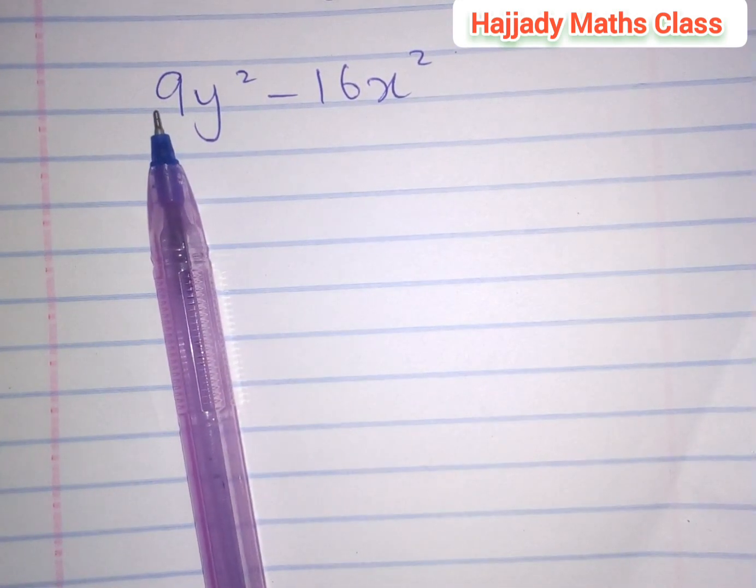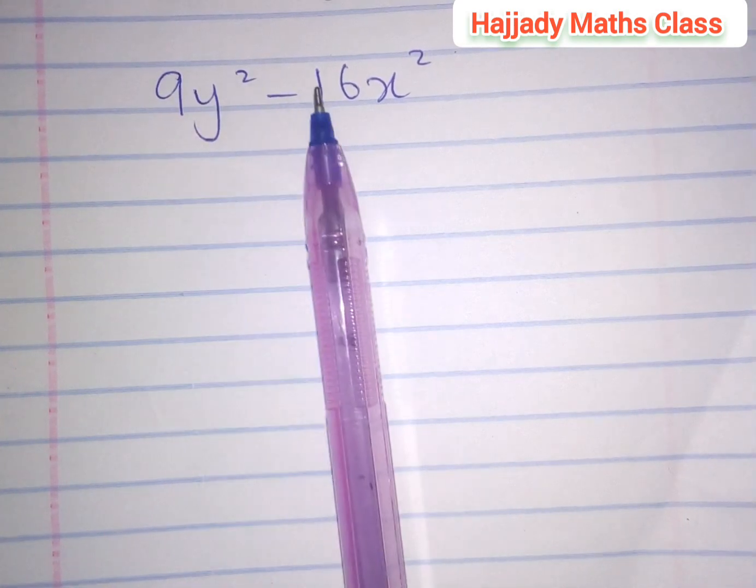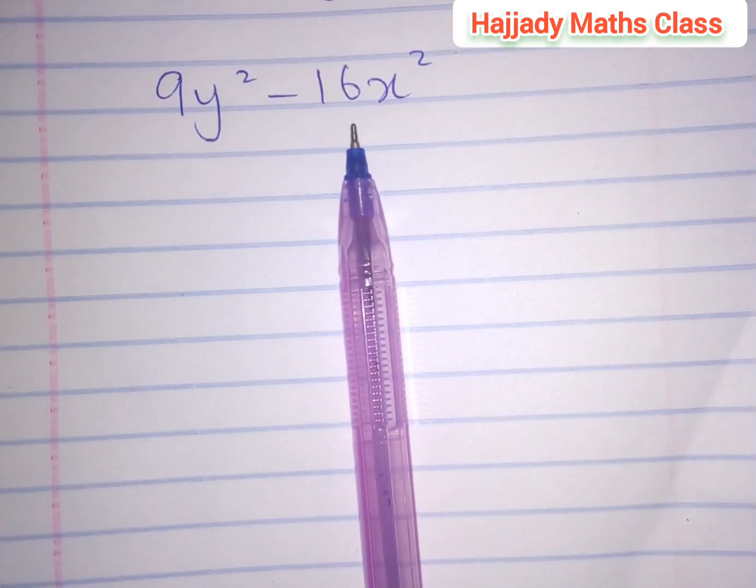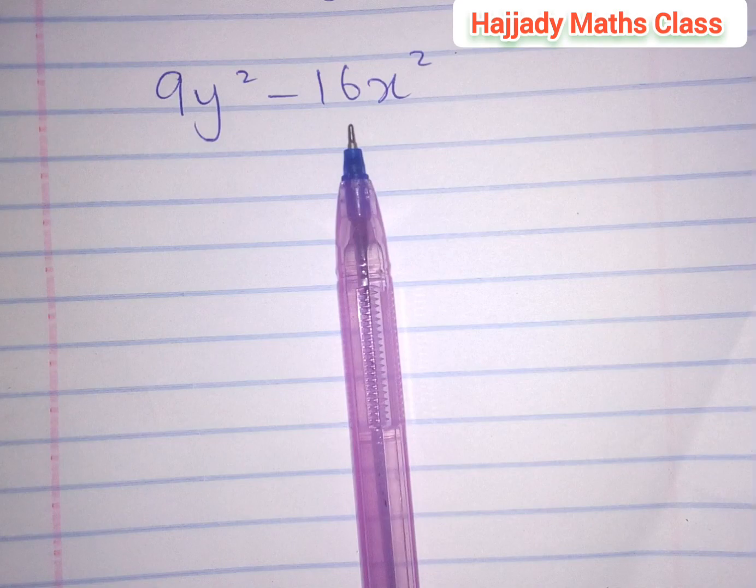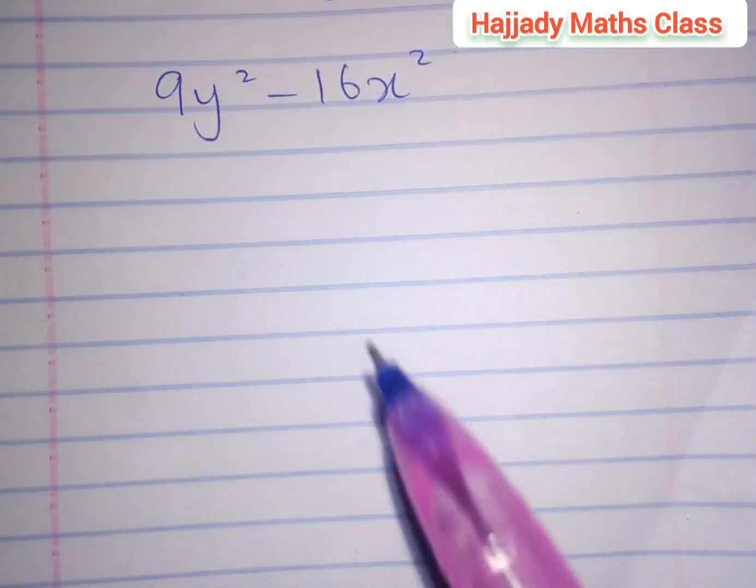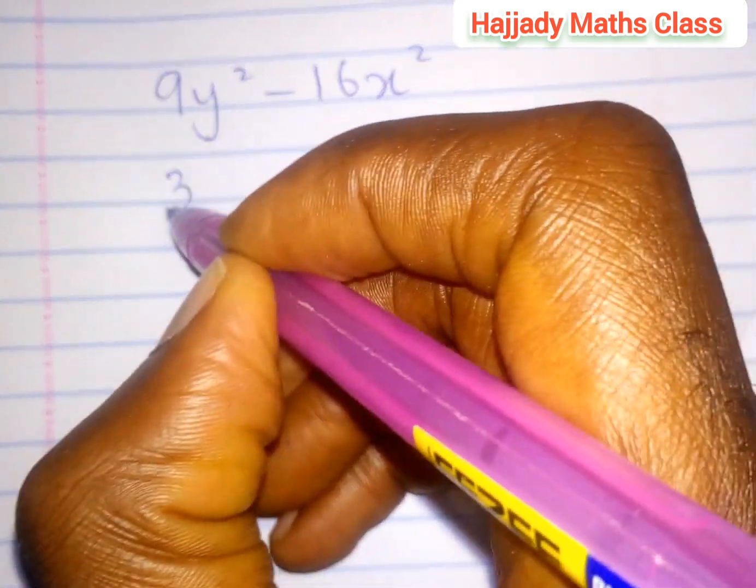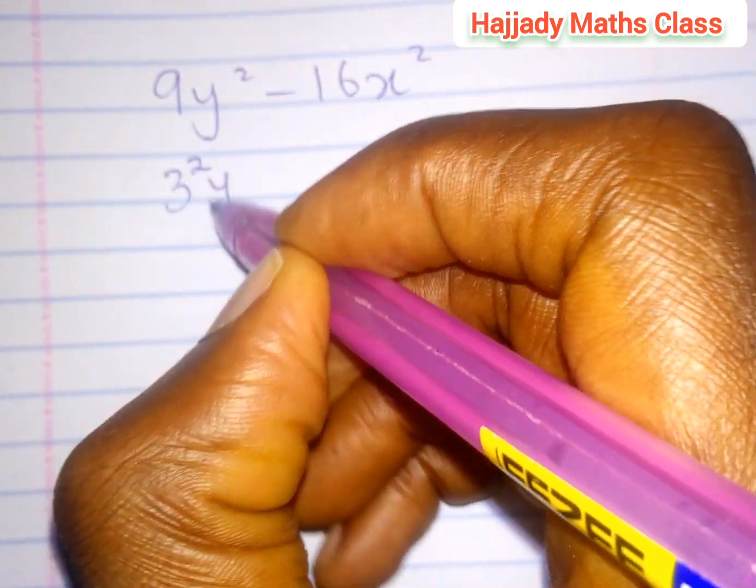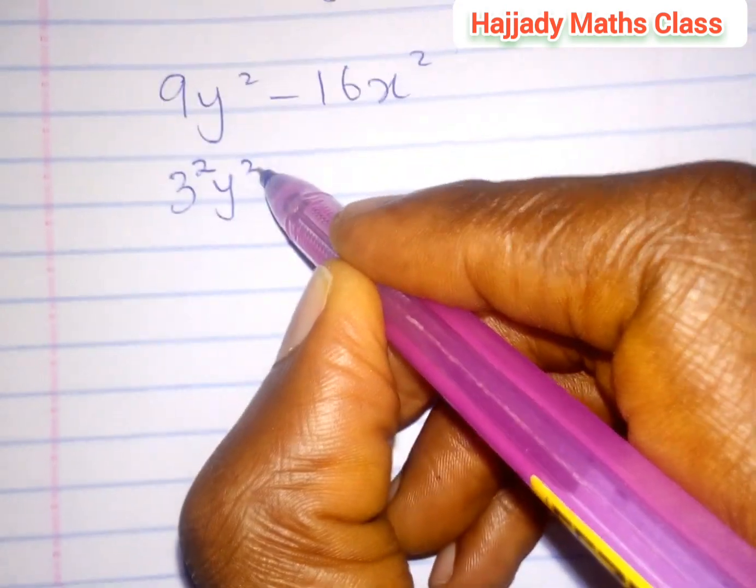We have 9. 9 is a perfect square. 16 is also a perfect square. So, in order for us to do that, we know that 9 can be expressed as 3 raised to power 2, y raised to power 2.